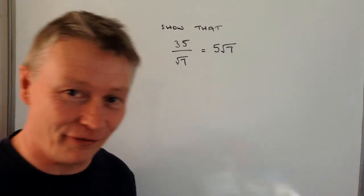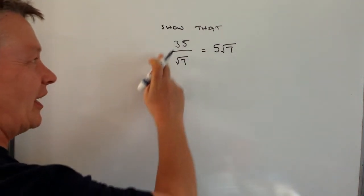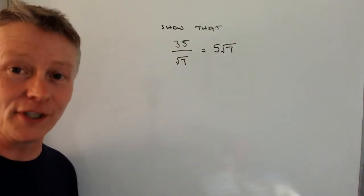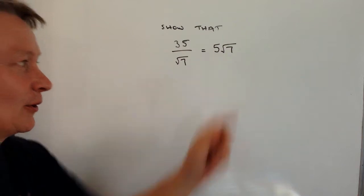However, we're going to do exactly the same thing because really all we're doing is just demonstrating that we can manipulate this 35 divided by root 7 and make it look like that.